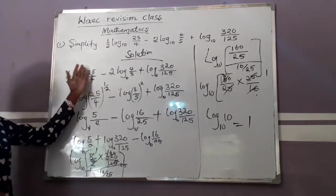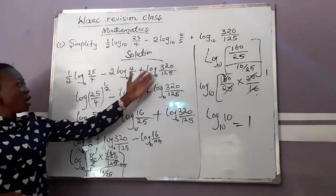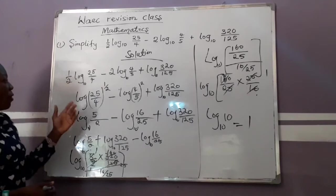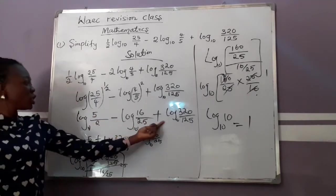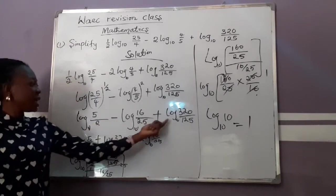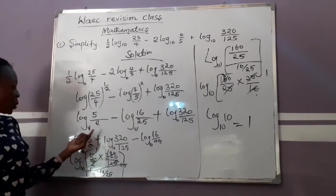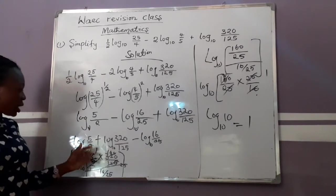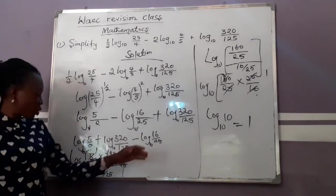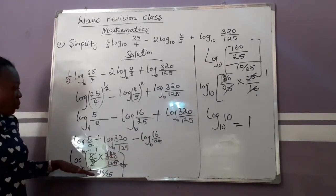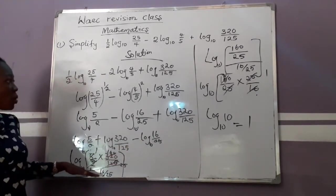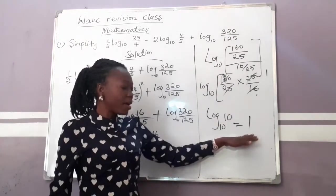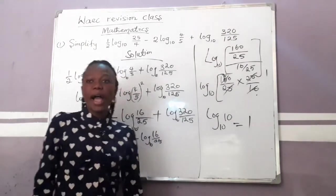So when simplifying a question like this, first know this rule: addition in logs turns towards multiplication — bring them together. Then subtraction turns towards division. You divide them, and then you arrive at your answer.